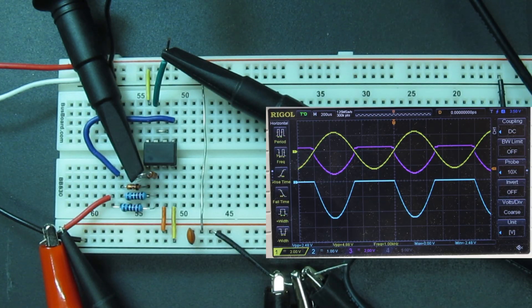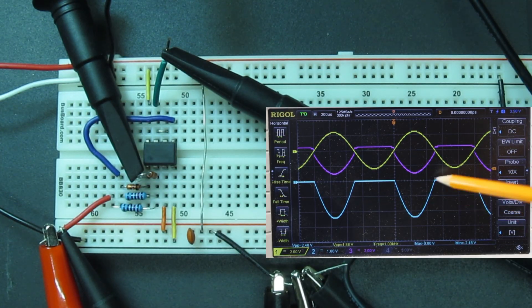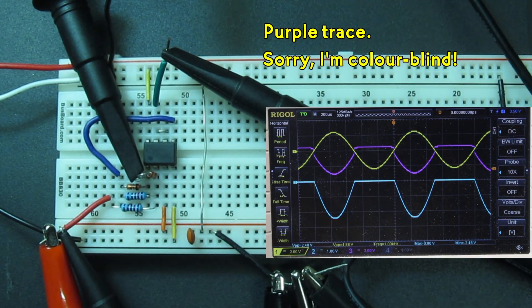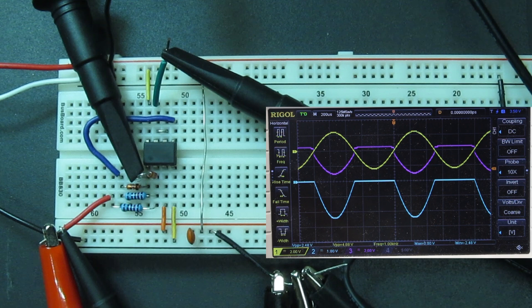Looking at the inverting output signal, it looks like a clean rectified version of the input, only upside down. The op-amp output of the blue trace shows that it clamps at one diode drop, rather than swinging to a supply rail.